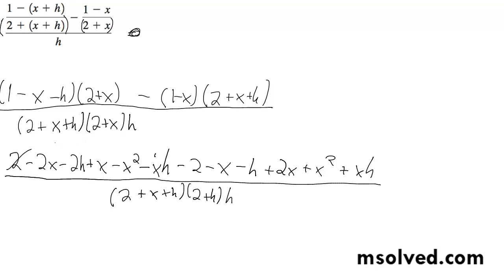So the 2's cancel out, x cancels out, 2x's cancel out, x squared's cancel out. And we're left with negative xh minus h plus xh, and the h cancels out of all those.